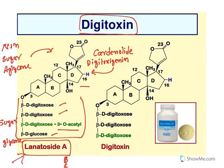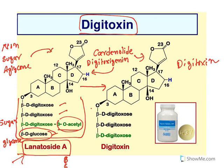Partial hydrolysis of lanatoside A results in digitoxin. The cardenolide is the same — the difference is that the 3-acetyl group and the terminal beta-D glucose are removed. So partial hydrolysis of lanatoside A results in digitoxin.